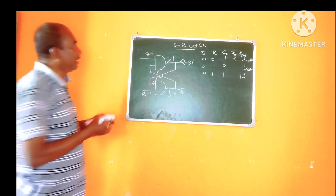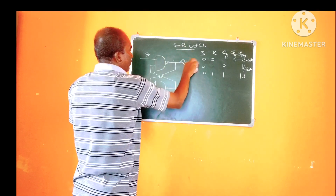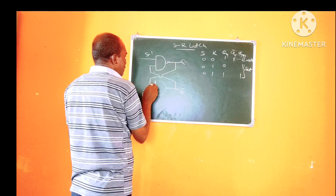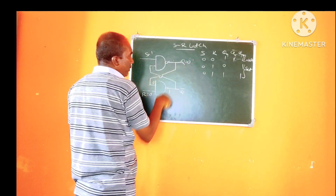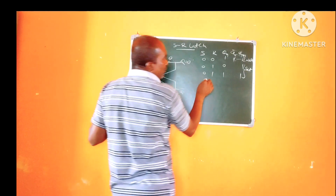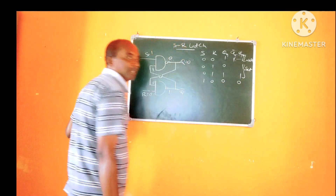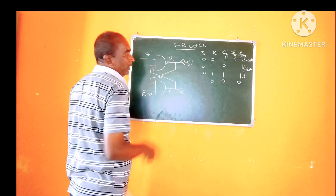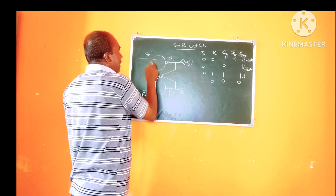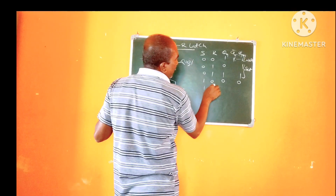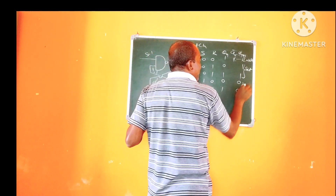Similarly, consider the 1,0 combination — that means S=1 and R=0. If the present state is 0, the gate logic produces a next state of 0. If the present state is 1, the feedback also produces a next state of 0. So by assuming any present state, we are getting the value of 0. Hence, it is the reset state.